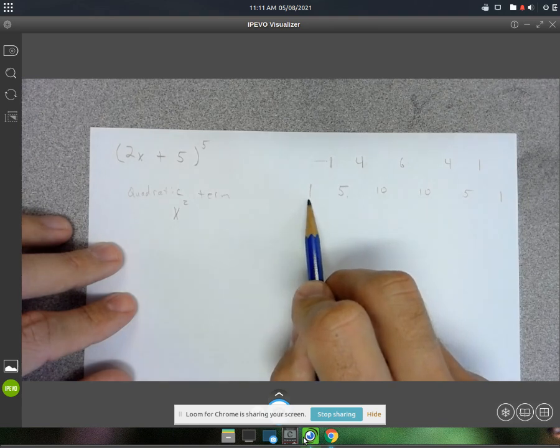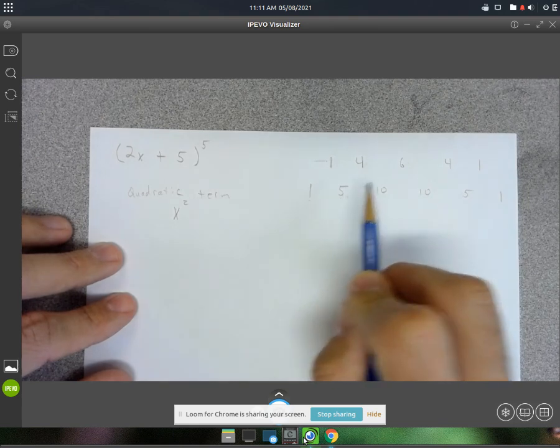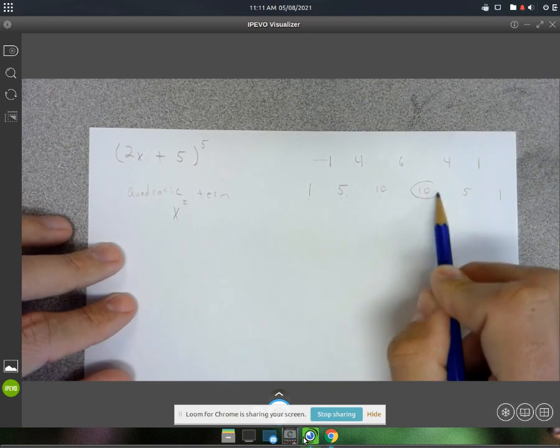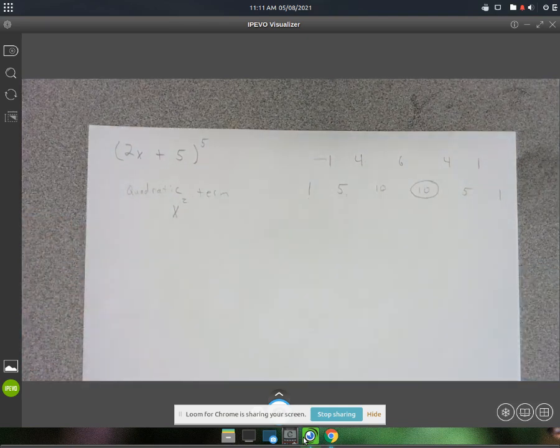So this one's going to be x to the 5th, x to the 4th, x to the 3rd, this one's going to be x to the 2nd power, that's the one I want.